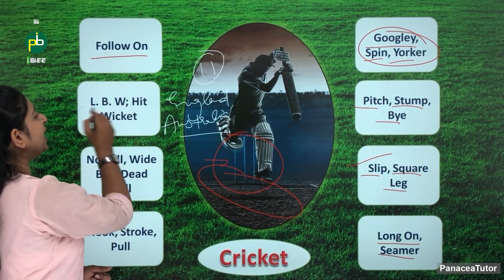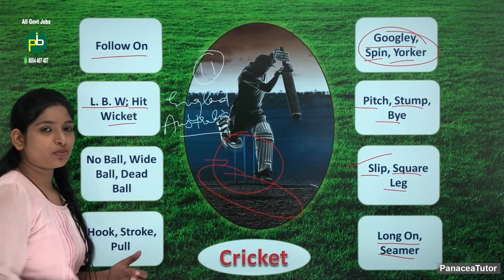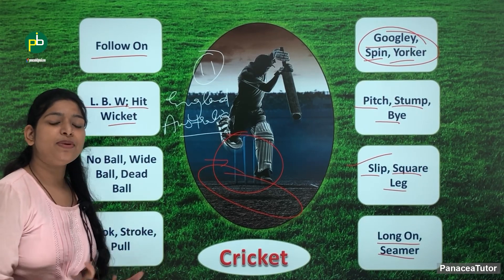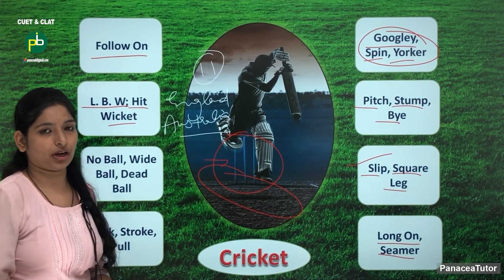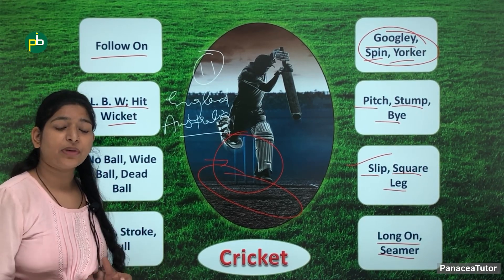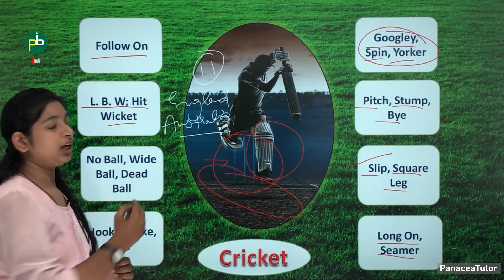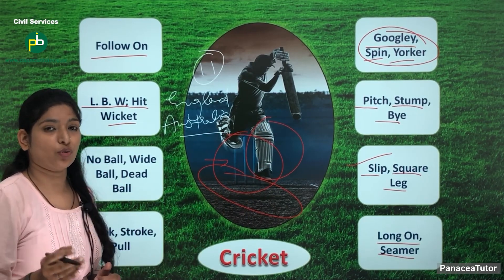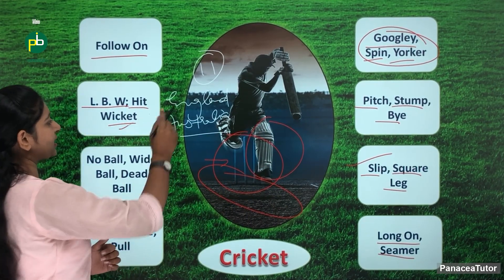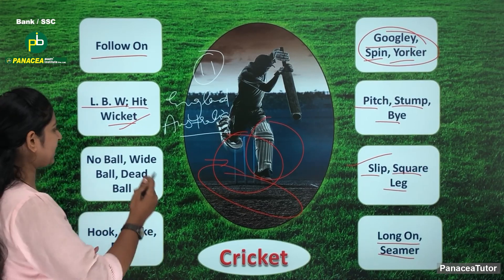Follow on, LBW, hit wicket. LBW means leg before wicket. If the ball is on the back of the bat, in front of the wicket, it is called LBW out. In the same way, hit wicket is also an out technique.